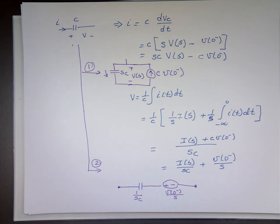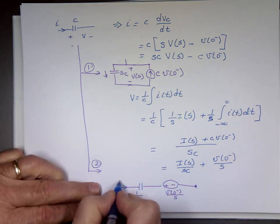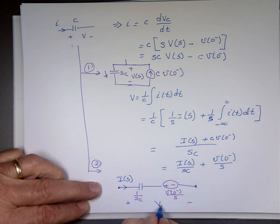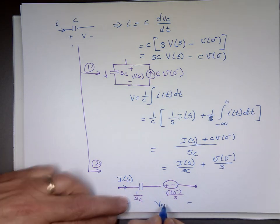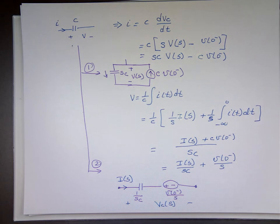So anytime you have a capacitor, you can replace it with option one or option two, whichever makes the problem easier. This is the current going through it and this is the voltage vc as a function of s across the capacitor. So if we have that, we're done. Anytime we have a circuit, we change it from time domain to s-domain using these rules, solve it there, then change it back. We'll see that in the next video.